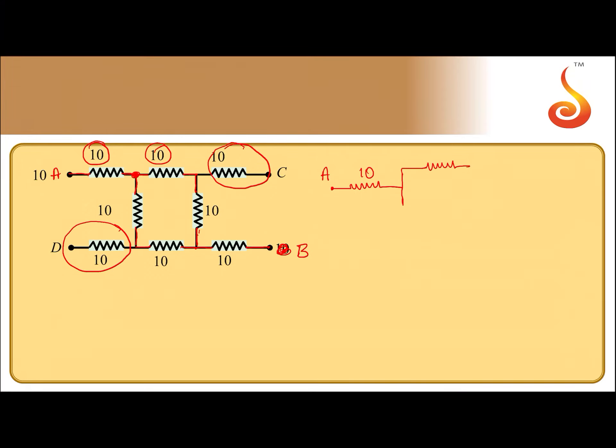One is this 10 ohm, then after this one more 10 ohm is there along the same path. Then along the other path, one 10 ohm—that is this resistance—